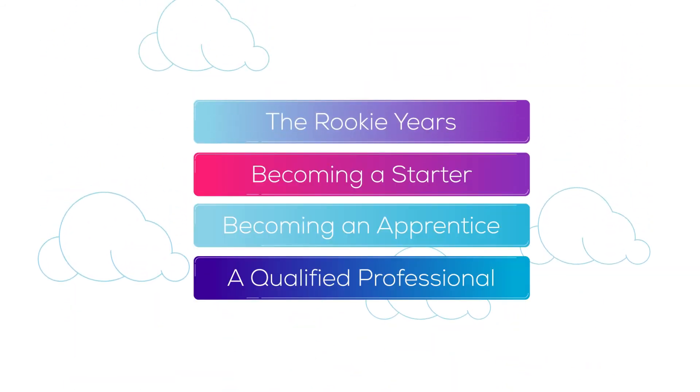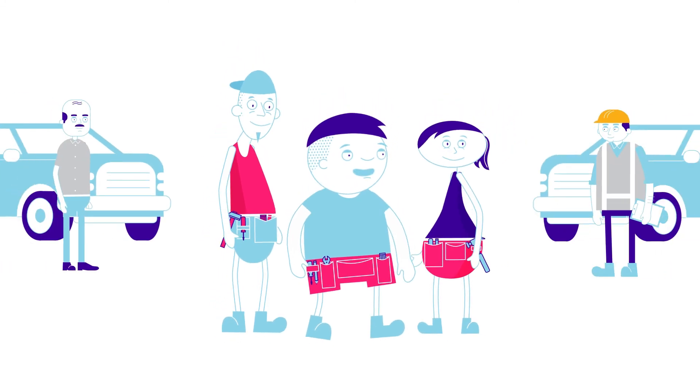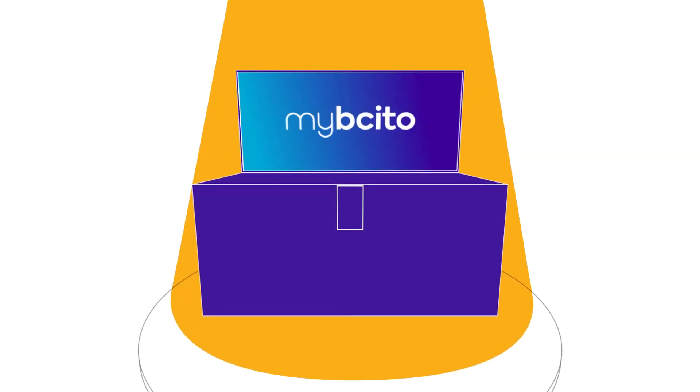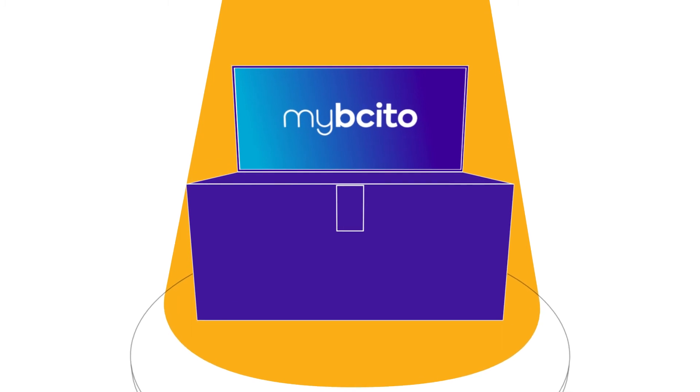So, in four easy steps, you've seen how a rookie with a dream can become a boss with a team. Sound like a plan? Well, you can totally do it with my BCITO.